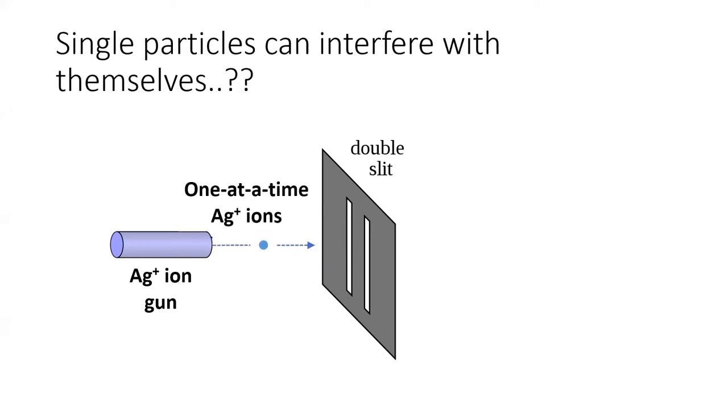But this experiment gets even crazier. We can make it so that our silver gun shoots only one ion at a time. When this happens, we see a bright spot where the single silver atom impacts the detector. As we let more and more silver atoms through, more and more spots start to show up on the detector. But as they start building up, something familiar starts to appear.